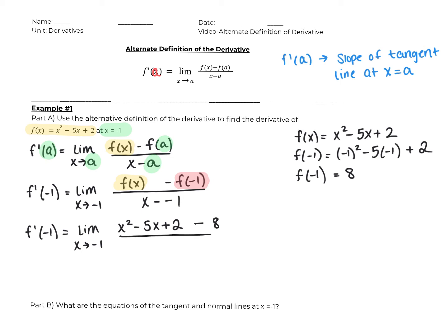So that eight goes right there, all over — and we can make x minus negative one into x plus one, that double negative. So we've got f prime of negative one is equal to the limit as x approaches negative one of x squared minus five x minus six, all over x plus one. All we did was combine the two and the negative eight.